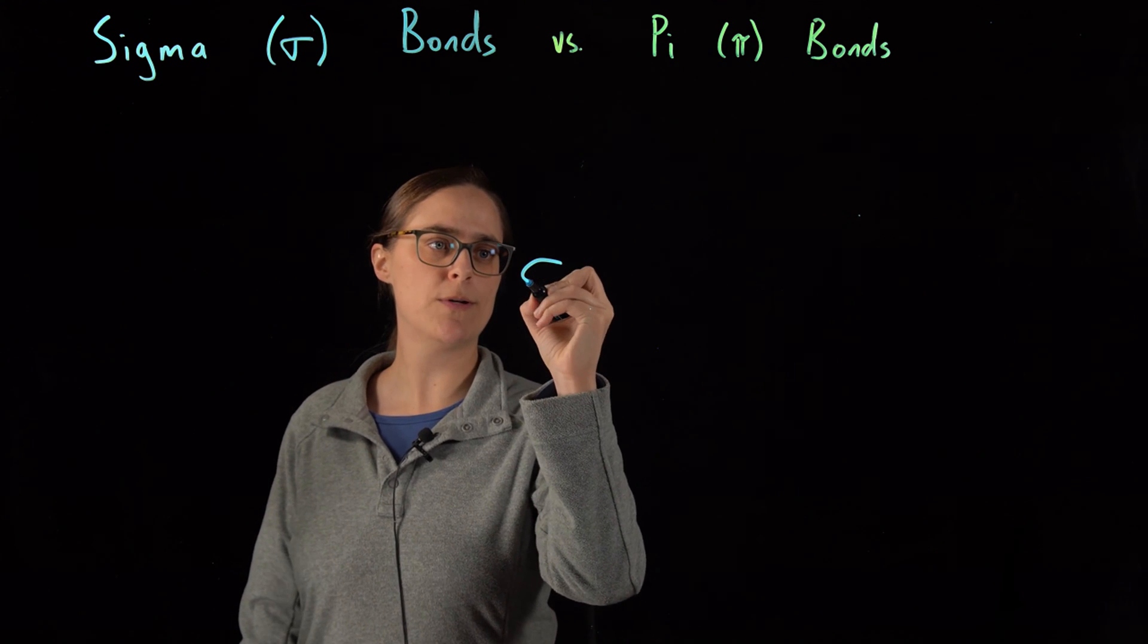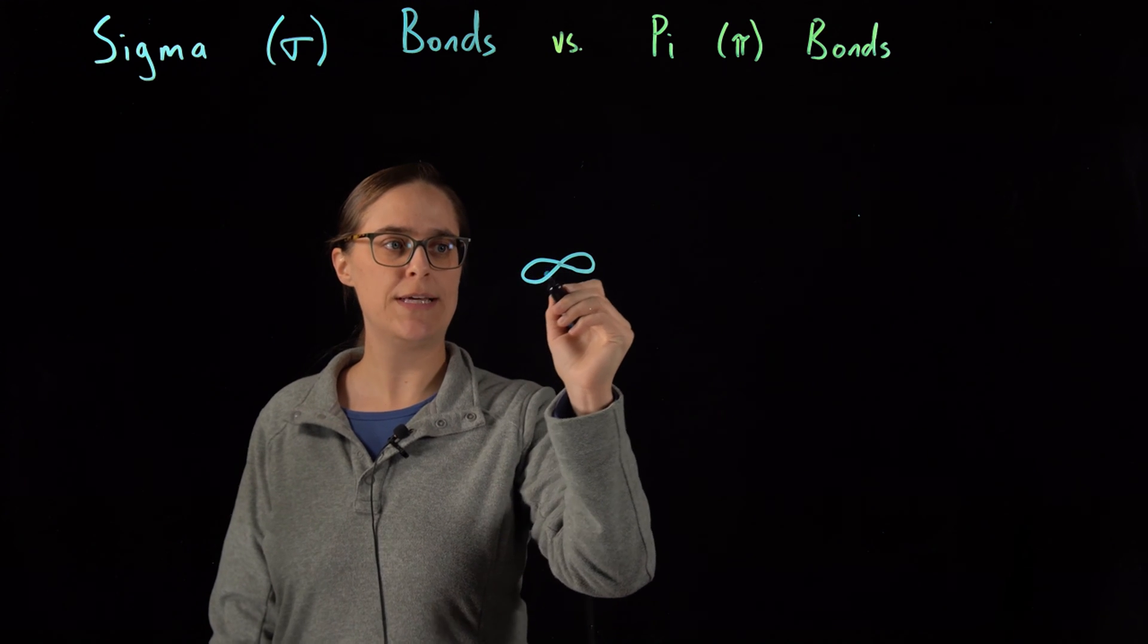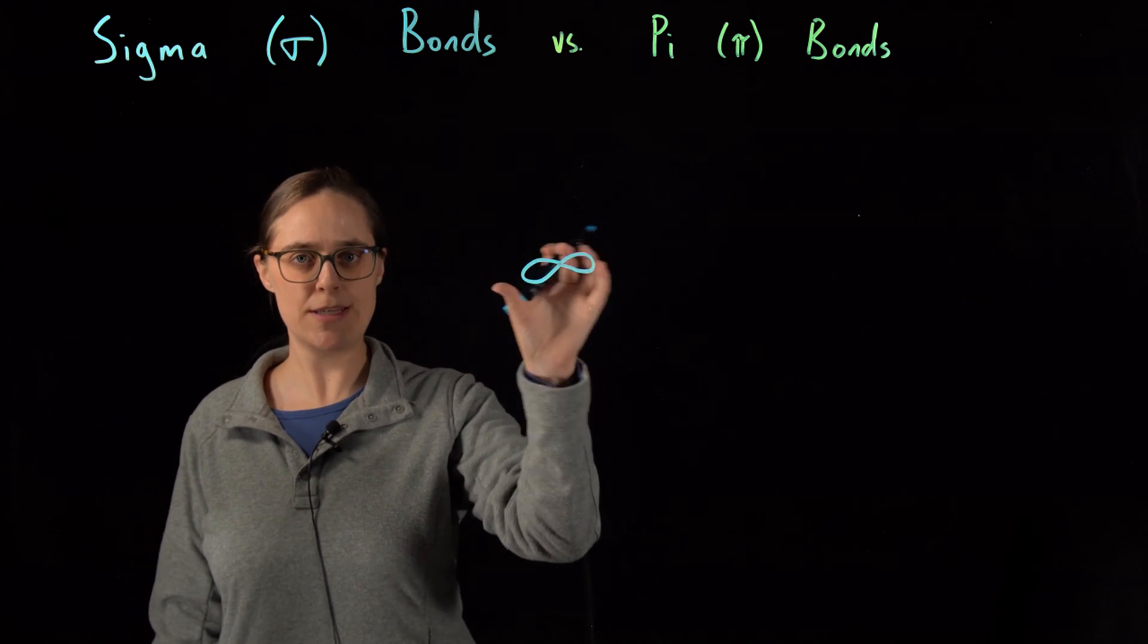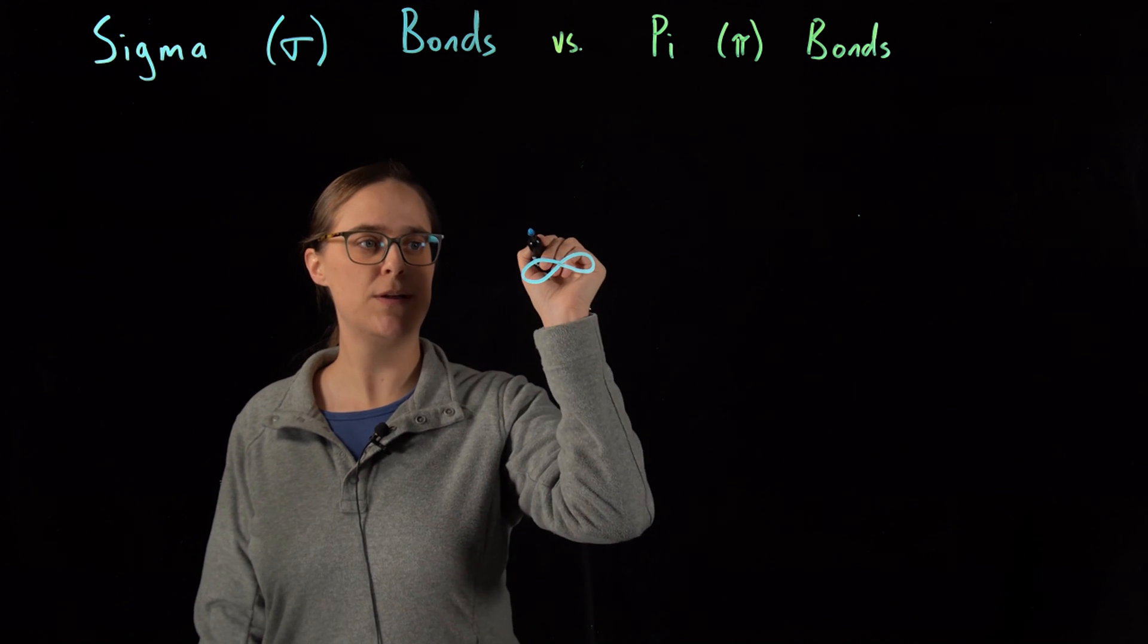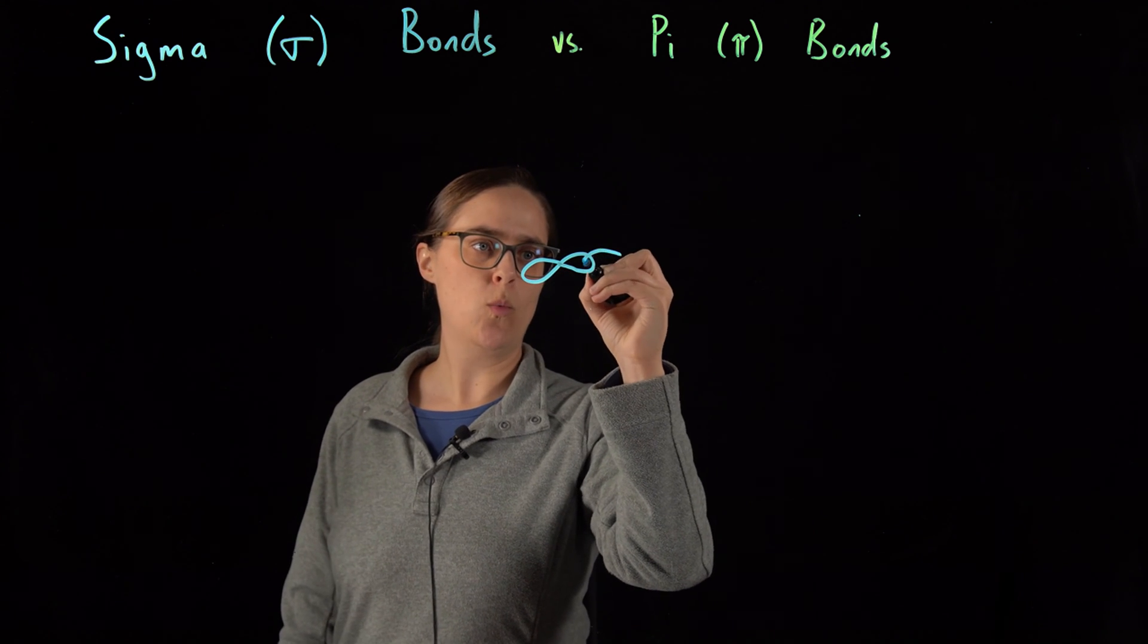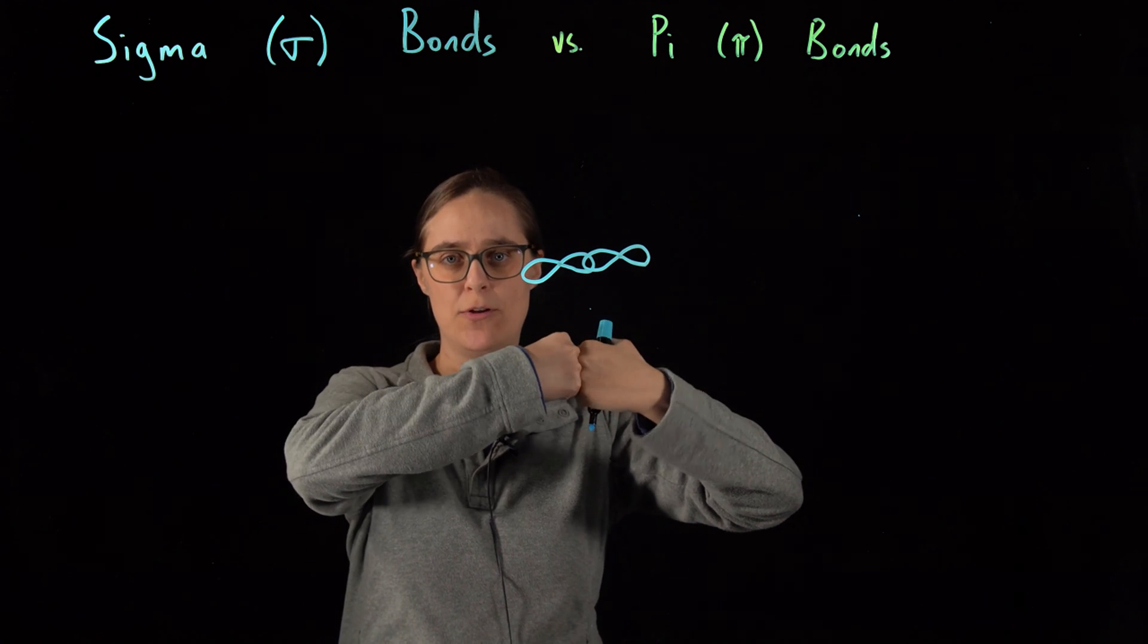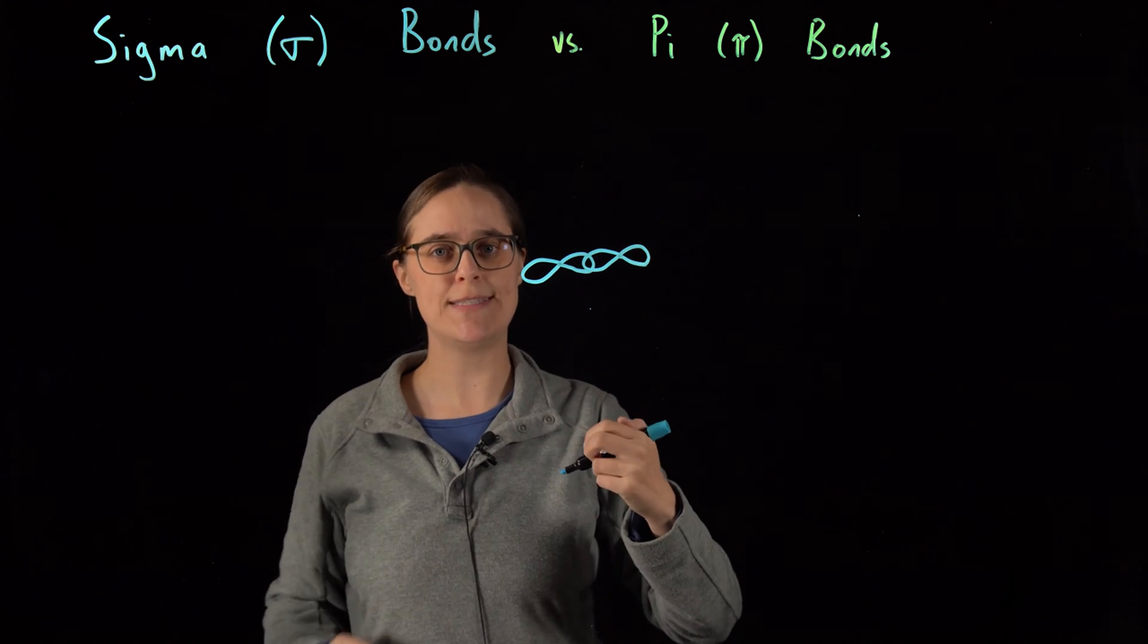So imagine that you have an orbital that's dumbbell-shaped. The nucleus is in the very center. This region of space is where electrons are most likely to be found if they're assigned to this orbital. A covalent bond is when an orbital from this atom overlaps with an orbital from another atom. One way in which we could get orbitals to overlap is this head-to-head overlap. This particular orientation is called a sigma bond.